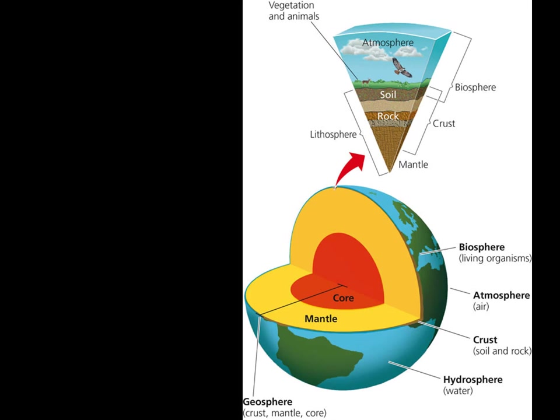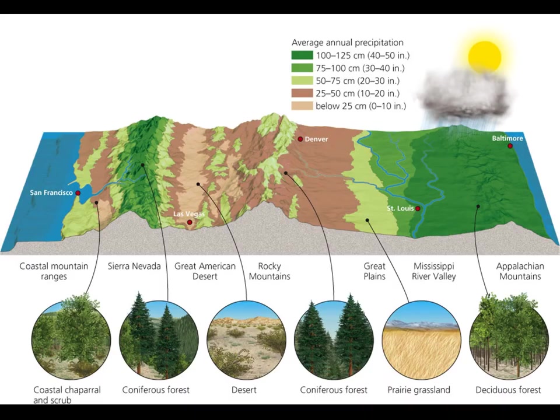That may seem like a big distance, but if you turned it on its side, you could walk that distance in a day without trying too hard. Different areas of the biosphere are divided into biomes, based on the overall climate of an area and the types of vegetation found there. This highly compressed version of an east-west slice of the U.S. shows some of the biomes we have in the country.